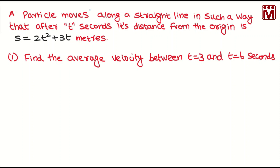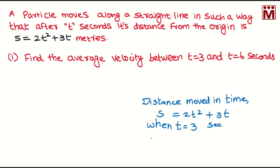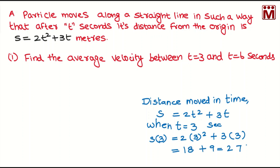The first part of the question asks how to cover the distance from t equal to 3 seconds to t equal to 6 seconds. When time is equal to 3 seconds, distance covered is equal to 2 into 3 squared plus 3 into 3. We substitute t equal to 3. The answer is 27 meters.